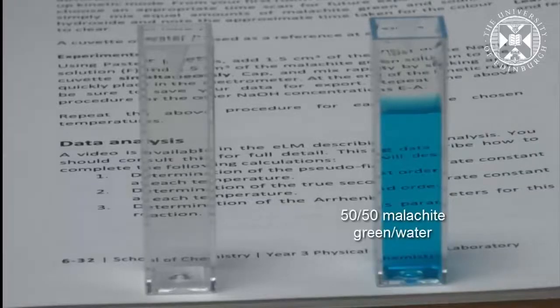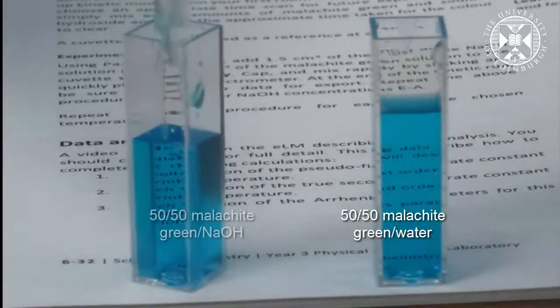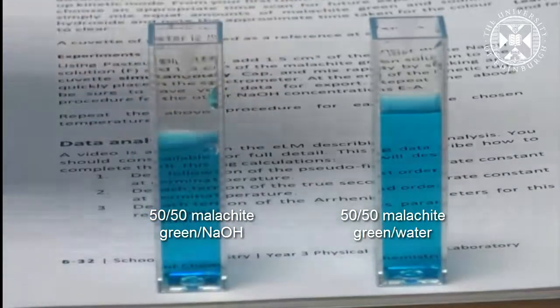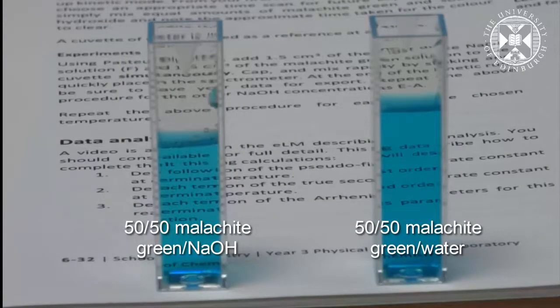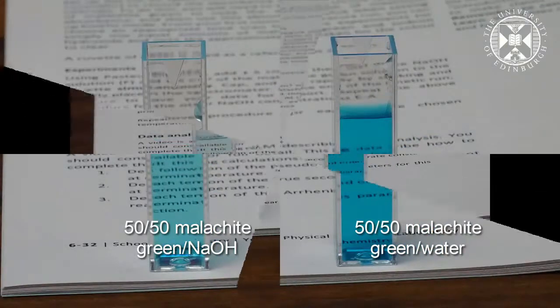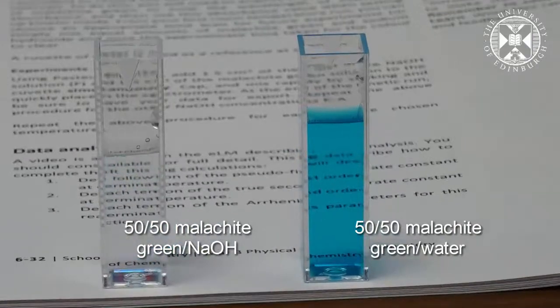We can watch this happen in real time to get an idea of what the spectrometer is measuring. On the right hand side there is a solution of malachite green diluted to half with water. On the left hand side equal volumes of malachite green and sodium hydroxide solution are mixed. After mixing, the camera is recording the change in color of the mixture. This is sped up here for convenience; the actual time was over the course of several minutes.